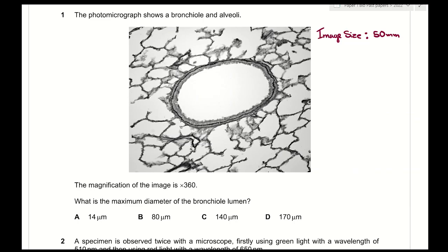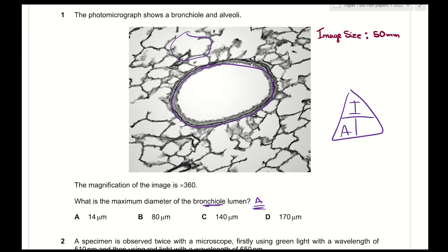Question 1: the photomicrograph shows a bronchiole and alveoli. The magnification of the image is 360. What is the maximum diameter of the bronchiole lumen? First, you must identify the bronchiole — this is the bronchiole, and what's surrounding it is the alveoli. The question asks for the maximum diameter, which means the actual size. The equation for magnification is image size divided by actual size.